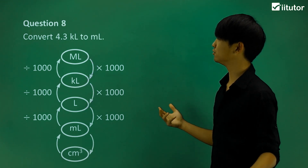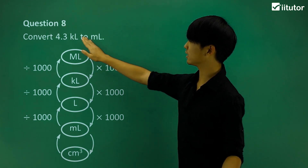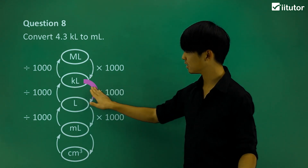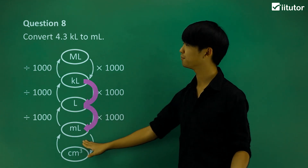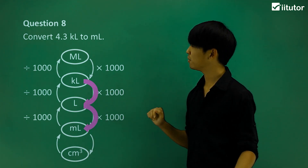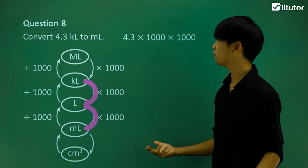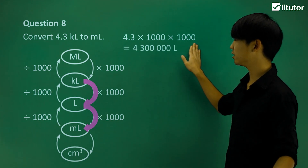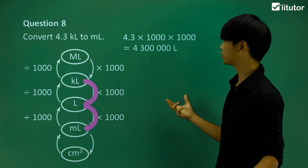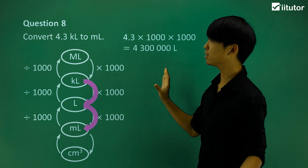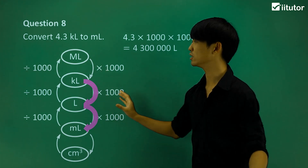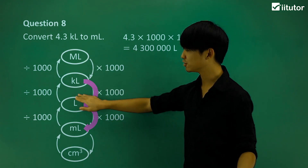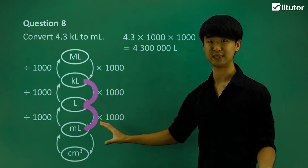Moving on to question number eight: we're converting from kiloliters to milliliters, going down two steps. So we multiply by 1,000 and another 1,000. So 4.3 kiloliters times 1,000 times another 1,000 gives us 4,300,000 milliliters. The conversions aren't particularly hard — we're just multiplying and dividing by thousands. But it's very important to know these terms and the order in which they are ranked in this conversion.